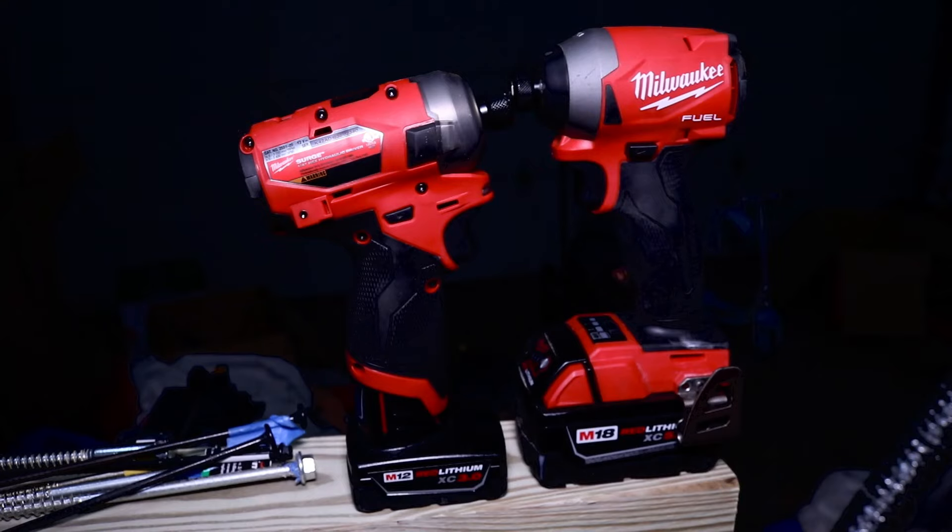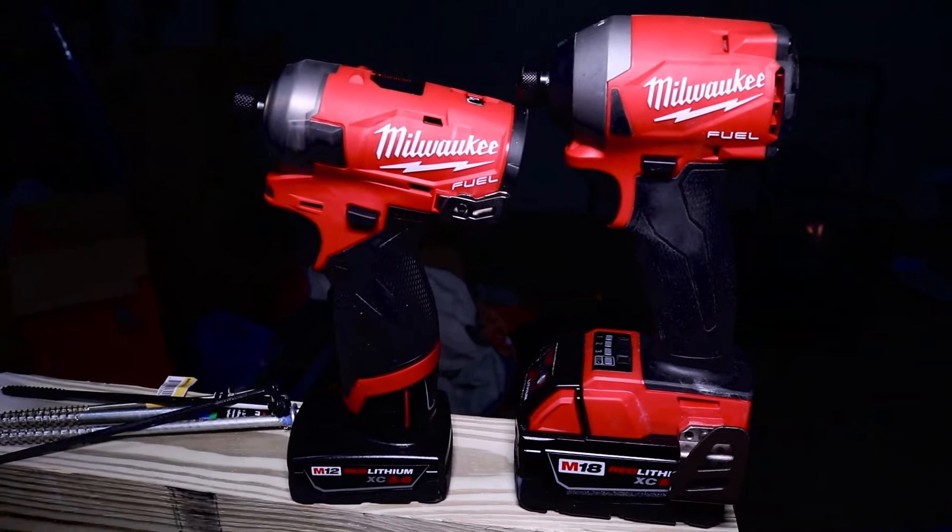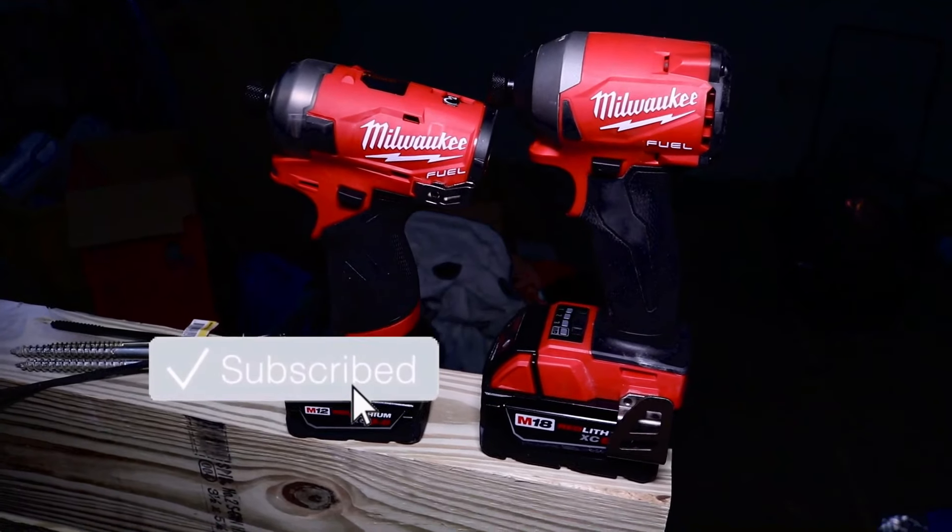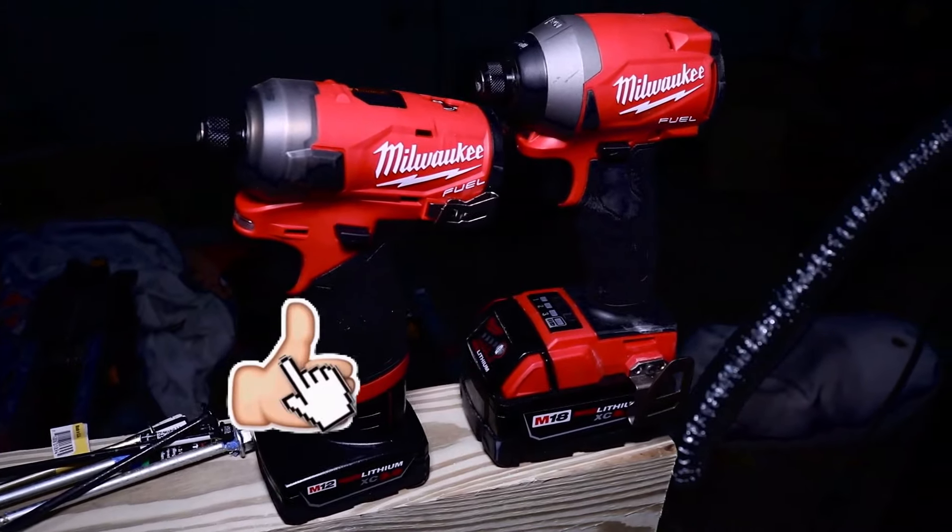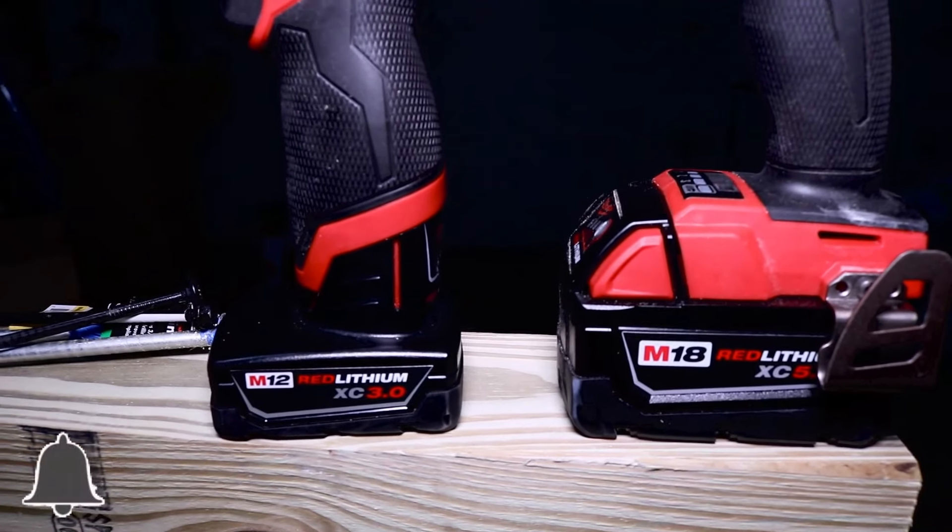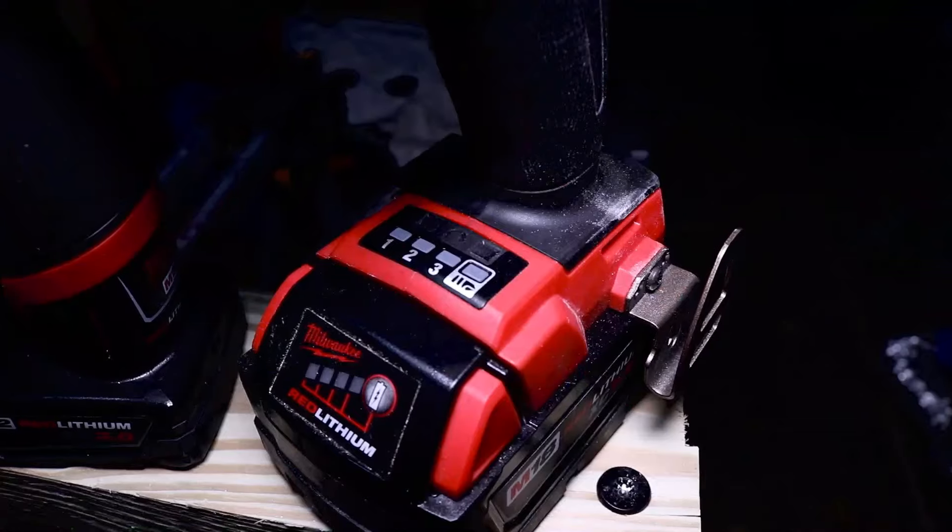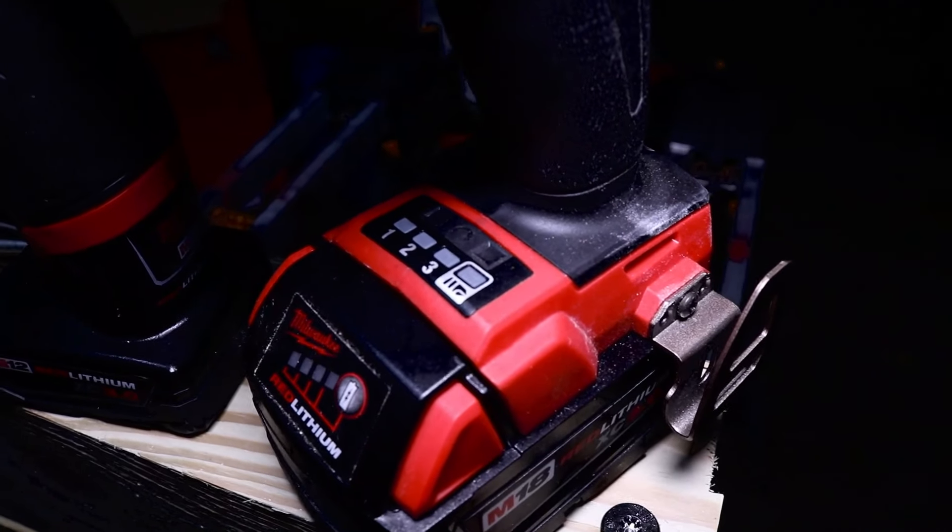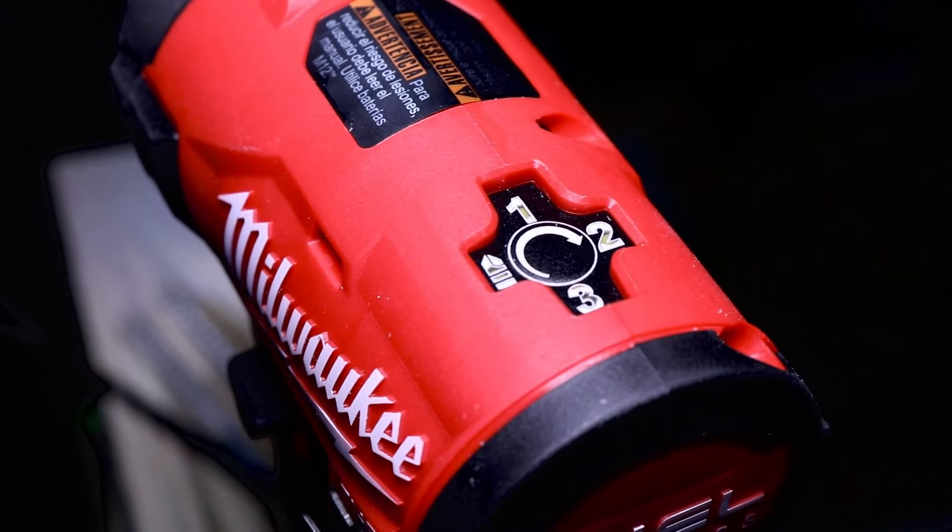Just to give you a comparison, the Gen 3 Milwaukee Fuel M18 beast of an impact driver. You can see that the M18 is quite sizable compared to the Surge. The M18 is pretty small itself, but putting them side by side, you really get a size difference. On the M18, all of the adjustments are down towards the bottom where the Surge is all up on top.